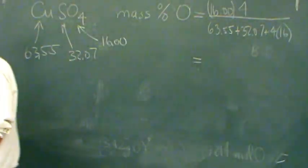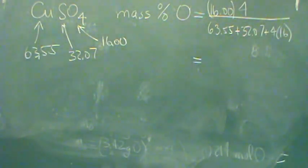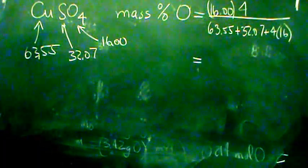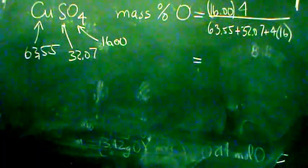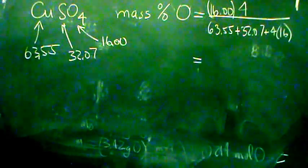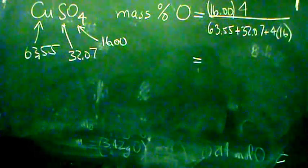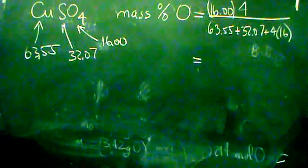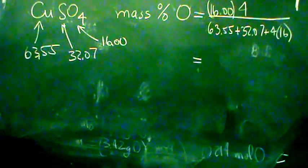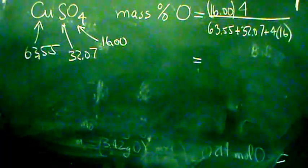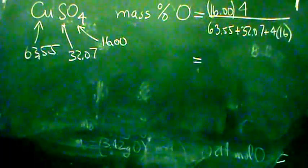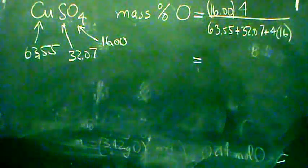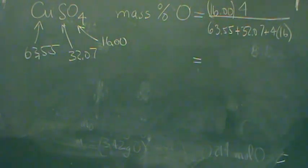If I add all that up and multiply by 100, I'm going to get the percent mass. So if I do the denominator, 63.55 plus 32.07 plus four times 16, that would be 64. The total on the bottom is basically 159.6. And so I'll take that, and then I'll go 64 divided by that number and times 100.